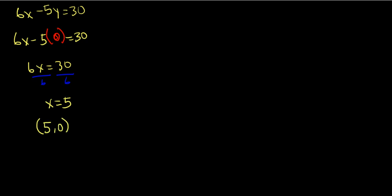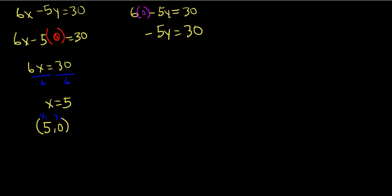So that would be x1 and y1. Now we're going to find the y-intercept, so plug in 0 for x. So 6 times 0 minus 5y equals 30. We can simplify that to negative 5y equals 30. In order to isolate the y, we have to divide both sides by negative 5, which leaves us with y equals negative 6. And because this is the y-intercept, the coordinates would be 0, negative 6.